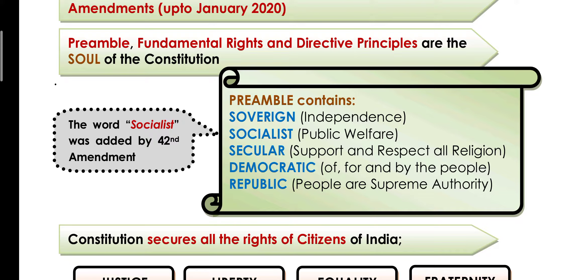Next is 'democratic' — India is a democratic country where the rule is of the people, for the people, and by the people. The country is run by the people, it is for the people, and it is by the people.